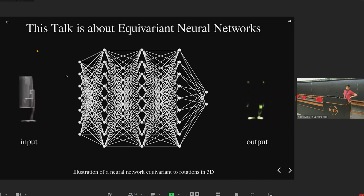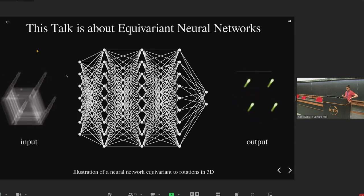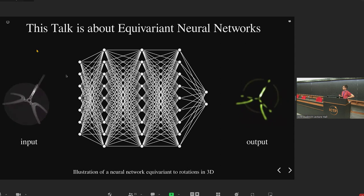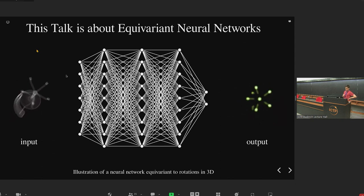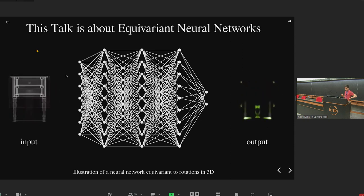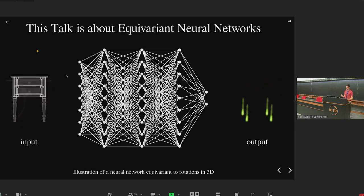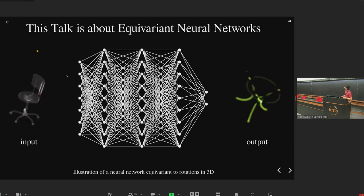Imagine you have a task you have to solve that you know respects some symmetries — in this example, rotation. What you can do is impose this symmetry from the start, because you know it's a strong bias on your problem. You can make a neural network architecture that respects this symmetry, so if you rotate the input, it will rotate the output the same way. This can be done such that it's always satisfied for any parameters — even before training. This animation I'm showing was collected before training.